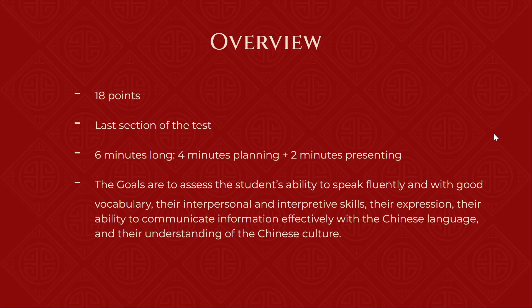Overview: the cultural presentation is worth around 18 points. It's the last section of the test, six minutes long — four minutes to plan and two minutes to present. The main goals are to assess the student's ability to speak fluently and with good vocabulary, their interpersonal and interpretive skills, their expression in Chinese, their ability to communicate information effectively, and most importantly, their understanding of Chinese culture.